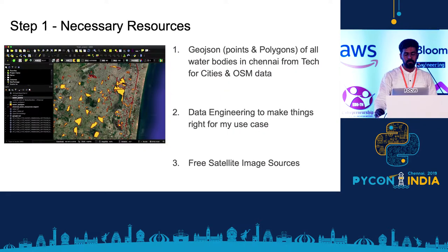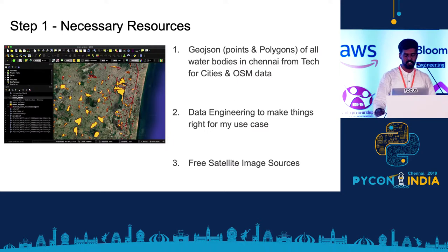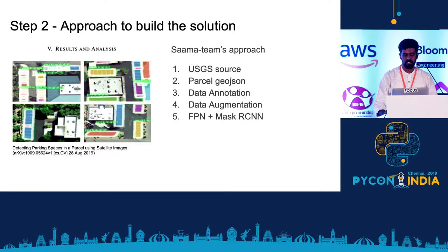Step one: I tried to get all the required JSONs — points and polygons of all 290 water bodies — by scraping Tech for Cities, that web app, and Open Street Maps. I did some manipulation to fit my use case, and then used a lot of free satellite images, like constellations of Sentinel, for all these locations.